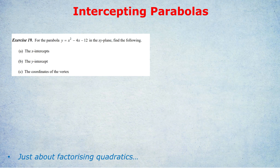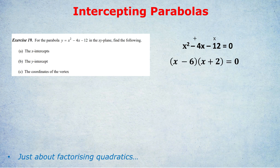Step one: we're going to put it equal to 0 and factorize it. Again we need two numbers that multiply to get negative 12 and add to get 4. Those two numbers will be negative 6 and plus 2. We factorize it as (x minus 6)(x plus 2), and the two solutions are 6 and negative 2. There we go — we've found the two x-intercepts.